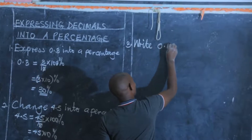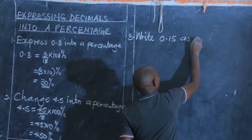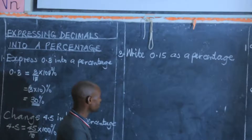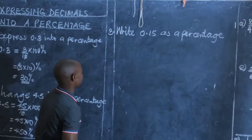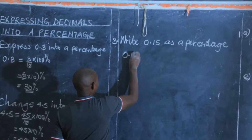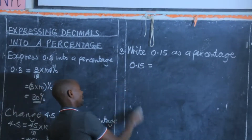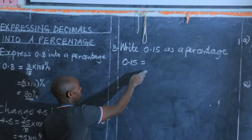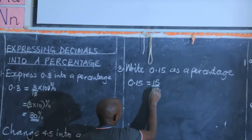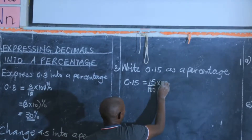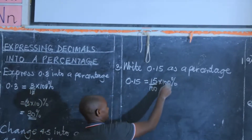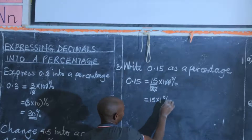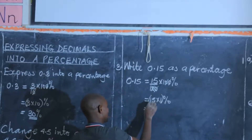Example 3: express 0.15 as a percentage. Write 0.15 in fraction form. How many digits do we have after the decimal point? There are 2, so when there are 2 digits it is out of 100. This gives us 15 out of 100. Multiply by 100%: the 100s cancel, leaving 15 times 1 percent, which gives us 15 percent.